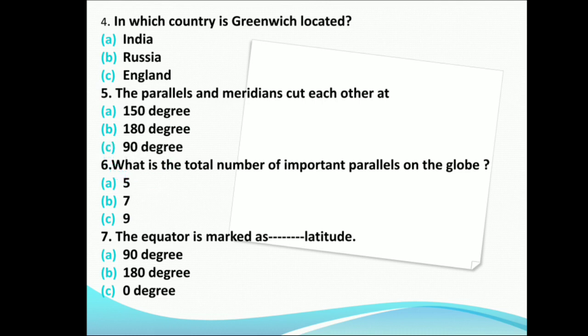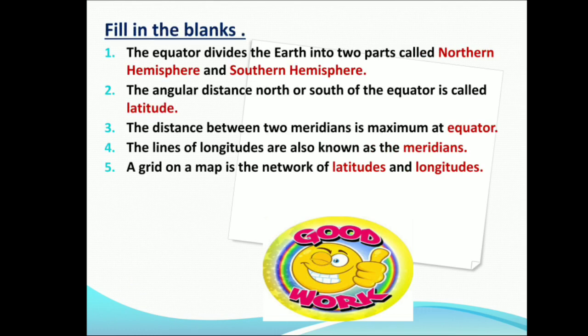The total number of important parallels on the globe is 7. The equator is marked as 0 degree latitude. Fill in the blanks: The equator divides the earth into two parts called Northern Hemisphere and Southern Hemisphere. The angular distance north or south of the equator is called latitude. The distance between two meridians is maximum at the equator. The lines of longitudes are also known as meridians. A grid on a map is the network of latitude and longitude.